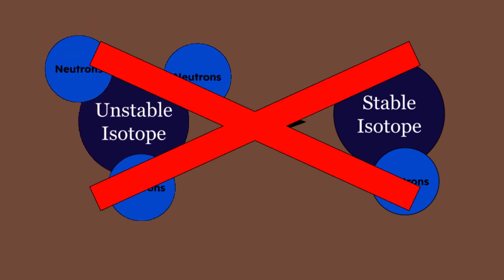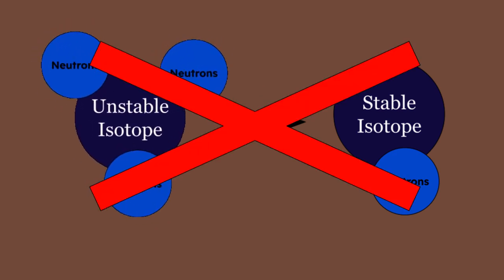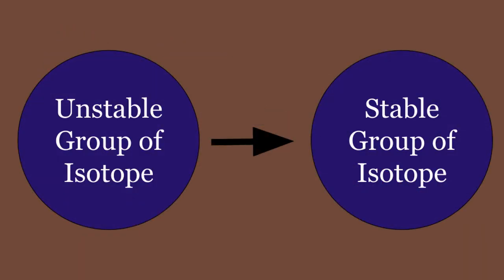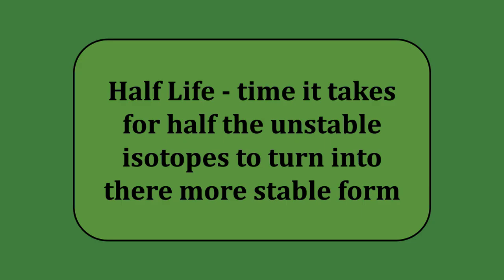It is impossible to predict how long a single atom will transform into another one, but it is possible to predict how long a large group of atoms will take to transform into another. Every unstable isotope has something called a half-life. Half-life is the time it takes for half of the isotopes in the group to turn into a more stable form.